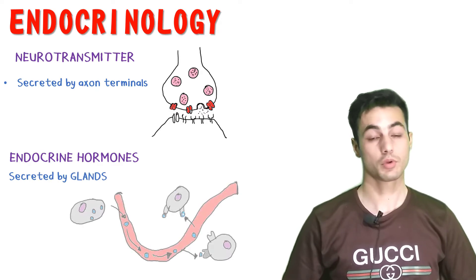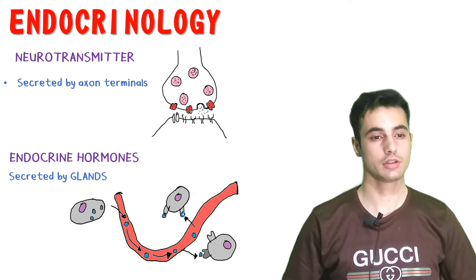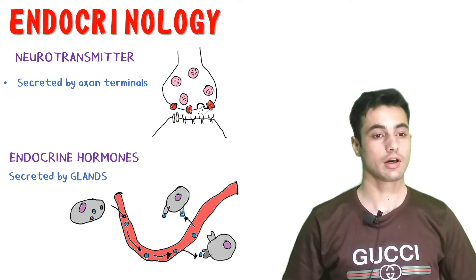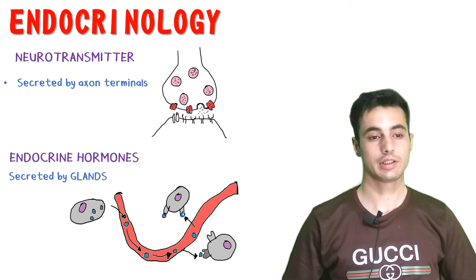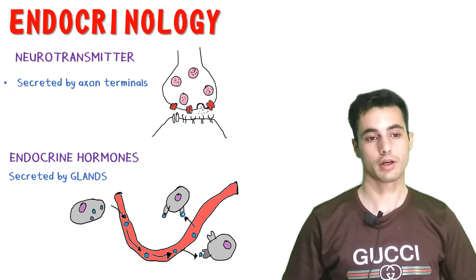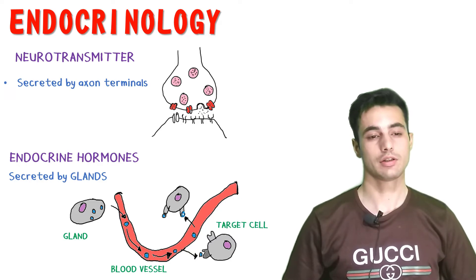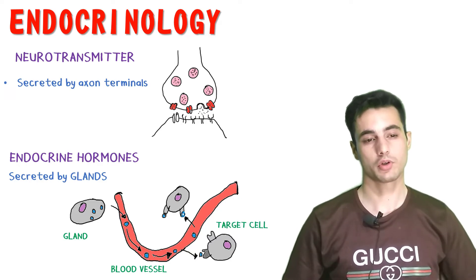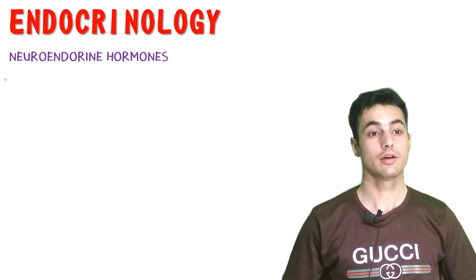Endocrine hormones — or what we usually call simply hormones — are secreted by glands, which are specialized cells that secrete hormones. When these specialized cells or glands secrete hormones into the blood vessels, the hormones reach the target cell located at some other part of the body.